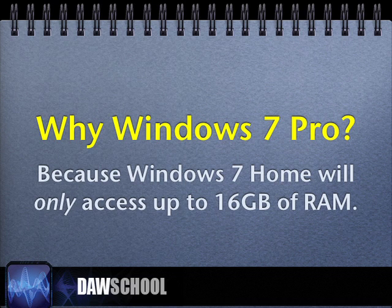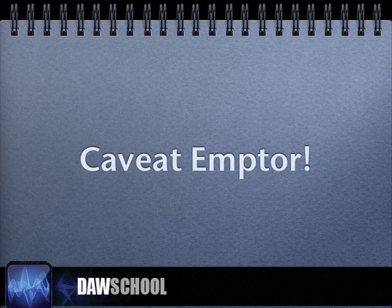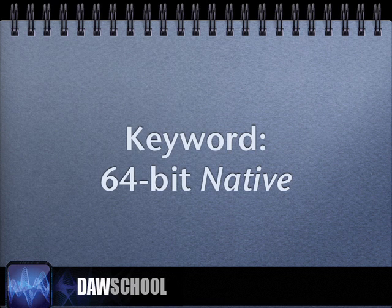For the PC, in my view, you want Windows 7 Pro because Windows 7 Home has a 16GB of RAM limitation — caveat emptor, buyer beware. The key word is native, 64-bit native. That's because if it's 64-bit native, that program will read all the RAM in the system. If it's 32-bit, it has a limitation of 4GB of RAM, which sounds like a lot but isn't when you really get into actual production. But again, it all depends on what you're producing.